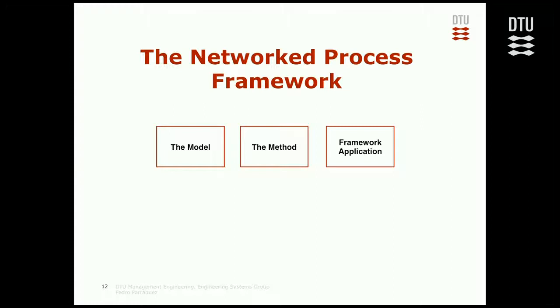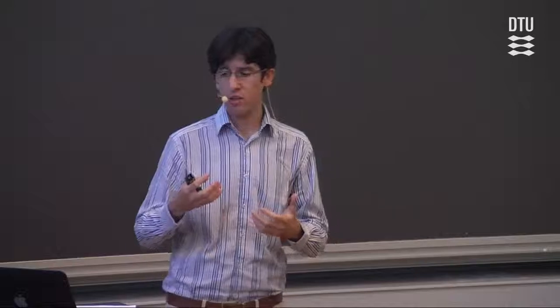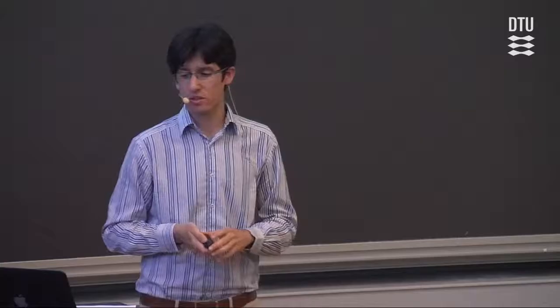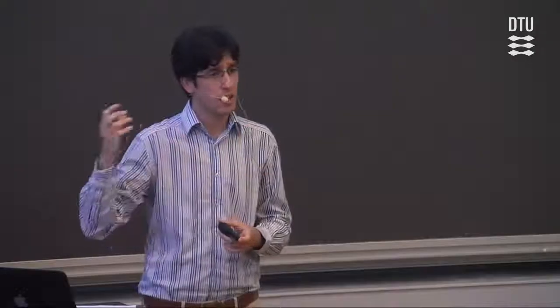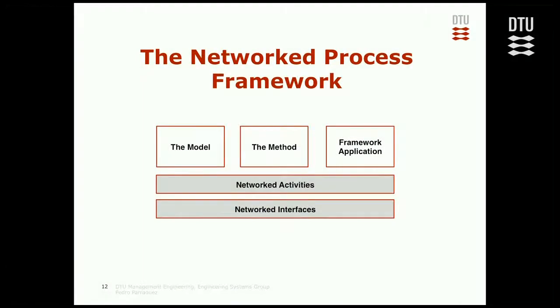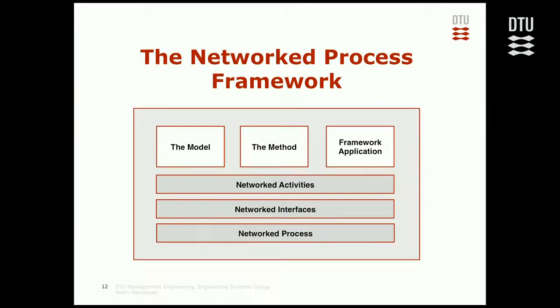In terms of performance measures, I was able to gather information about what the company expected in terms of performance, but also the actual performance. With this, I put together the network process framework, which is composed of the model, the method, and the framework application — divided into three different levels. Network activities, where activities have an architecture that we can measure, explicitly connected with the organization domain. The same for networking interfaces, where we see interfaces and their own architectures in the process domain. And finally, the whole process as a network process.